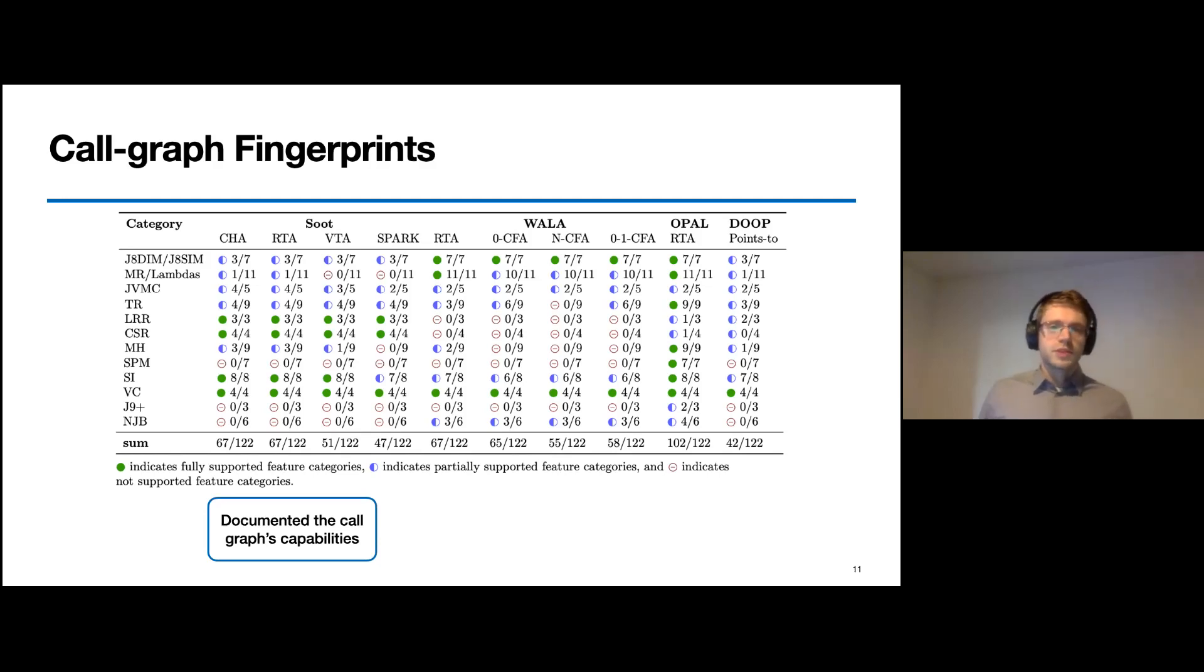I don't want to discuss the results in detail here. However, what I want to point out is that the overall feature support is very small, except Opal's call graph, which supports roughly 83% of all the features we identified. The average number of supported features is for all the other algorithms with 47% significantly lower.